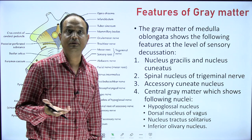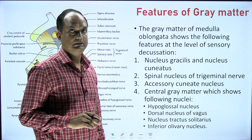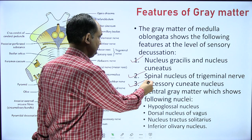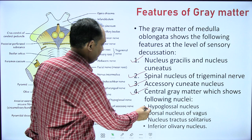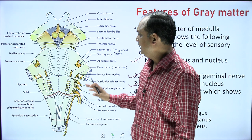The gray matter of the medulla oblongata at this level shows several important features. You will have nucleus gracilis and nucleus cuneatus, spinal nucleus of the trigeminal nerve, and the accessory cuneate nucleus. In the central gray matter, there are four important nuclei: the hypoglossal nucleus, dorsal nucleus of vagus, nucleus tractus solitarius, and the inferior olivary nucleus.